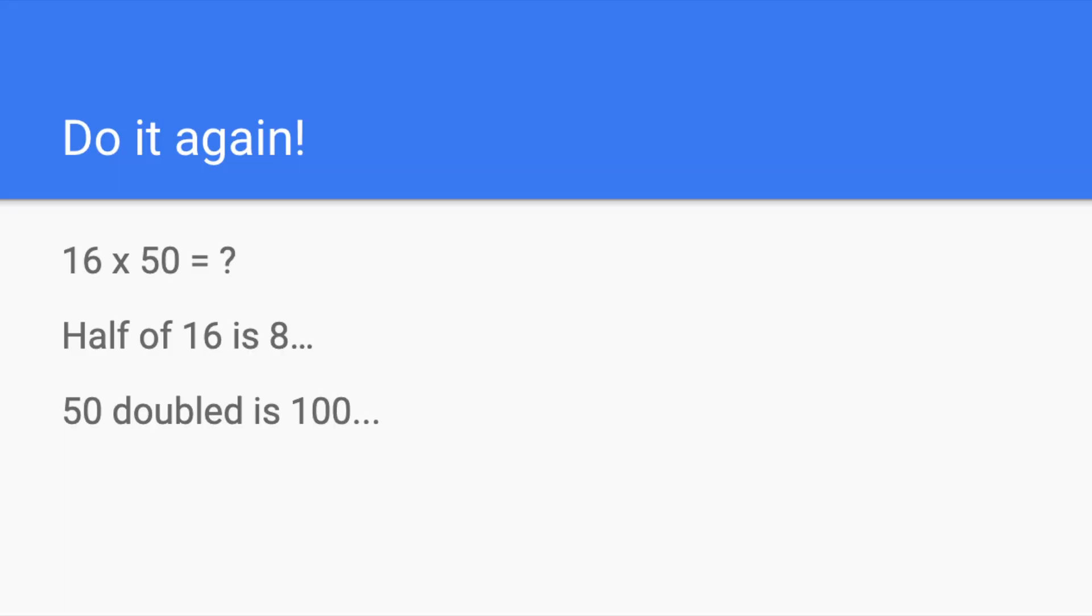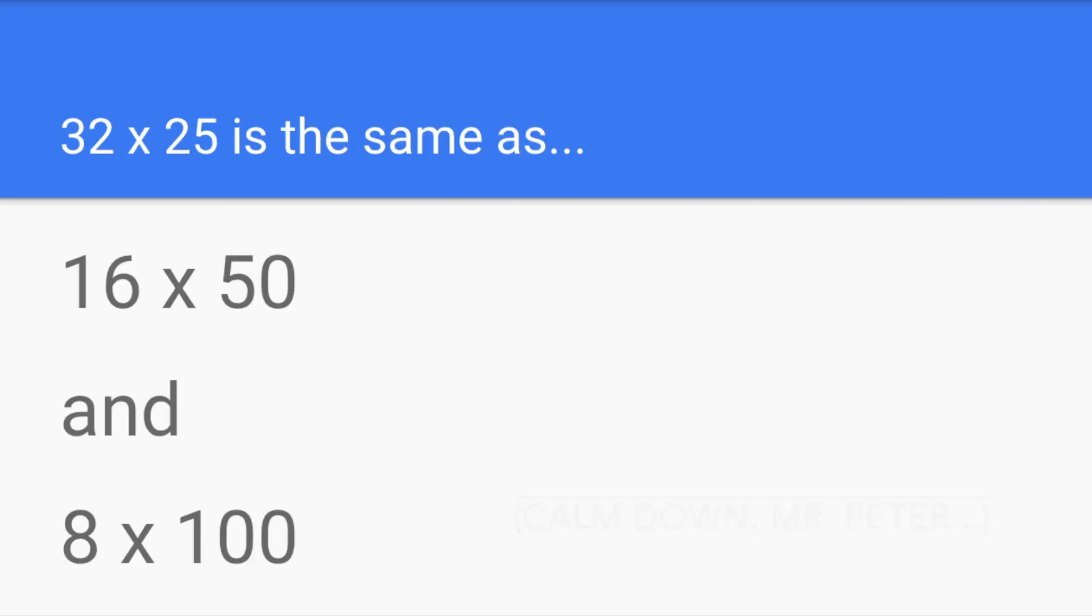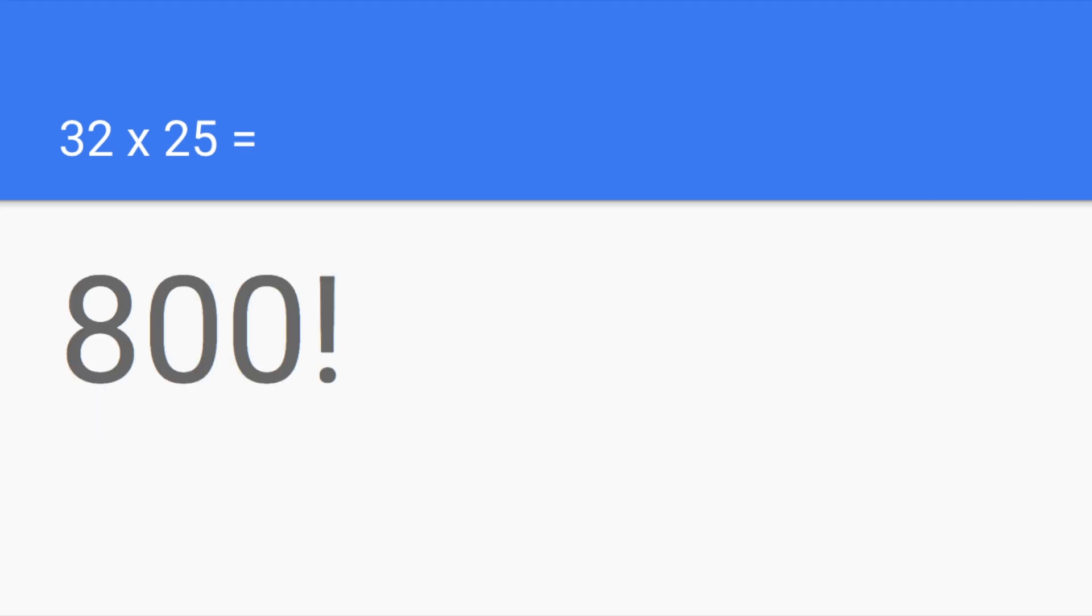Now, here's where this strategy gets really useful. 16 times 50 might not be that much easier to solve than 32 times 25, but there's nothing stopping me from doing it again. I know that half of 16 is 8, and if I double 50, I would get 100. So, now I can solve 8 times 100 instead of 32 times 25. I don't know about you, but that's a much easier problem to solve. It's 800.